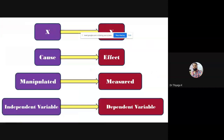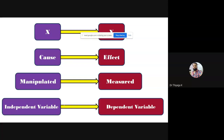Sometimes we may use different names for independent and dependent variables: independent as X, dependent as Y, causing variable, affecting variable. What is the effect variable? The effect represents the dependent variable. In the experimental method, the manipulating variable is the independent variable. The measured variable is the output variable, which we treat as the dependent variable. There are many names, but that is not at all an issue.